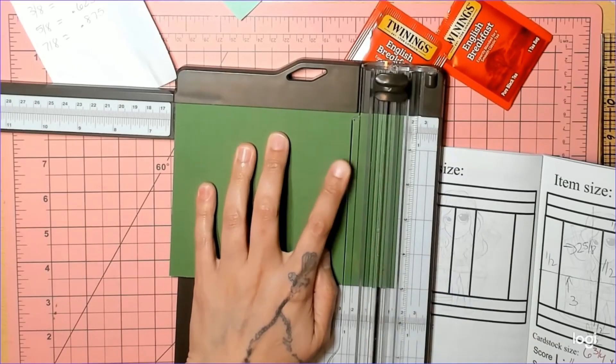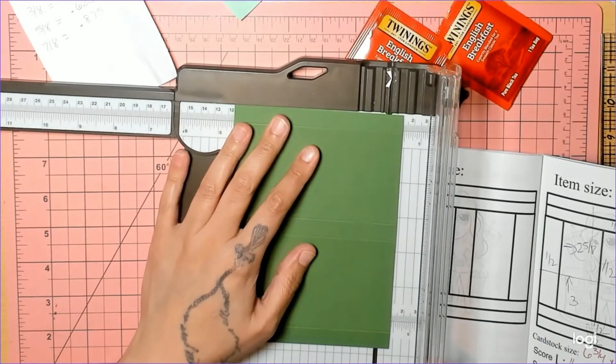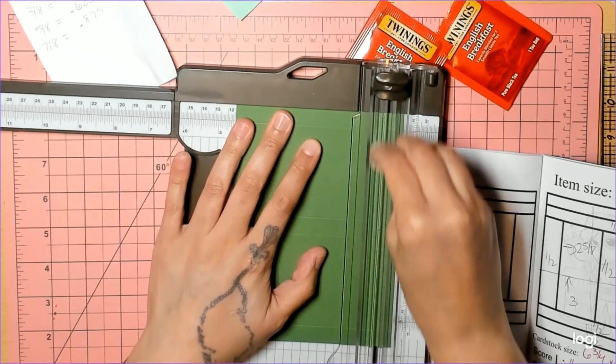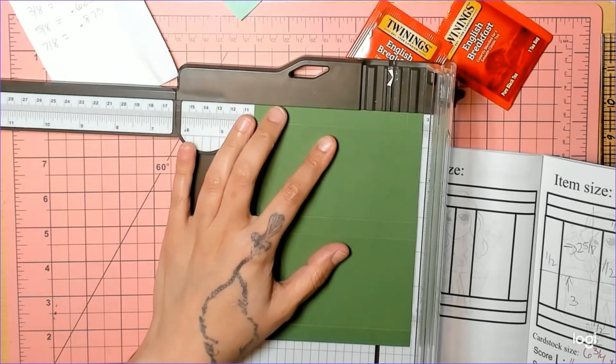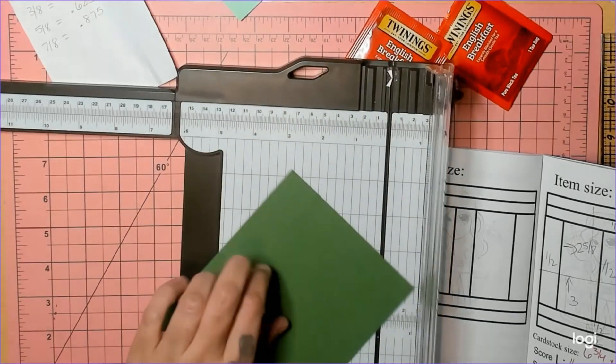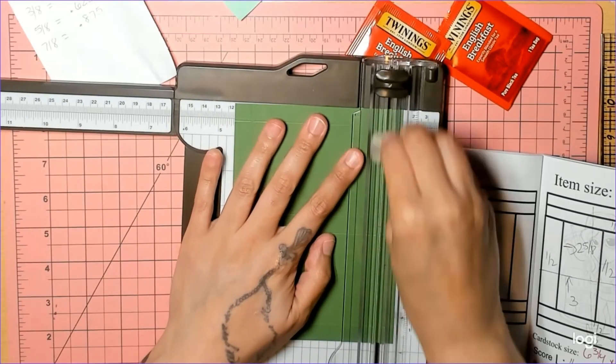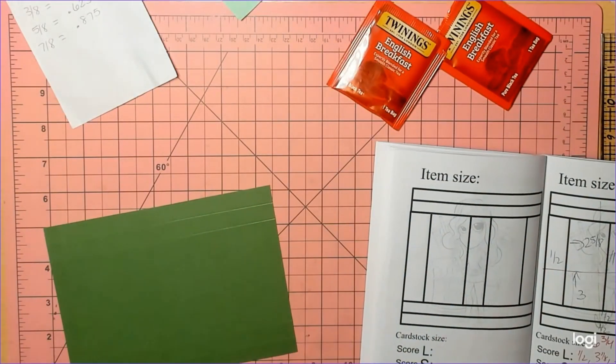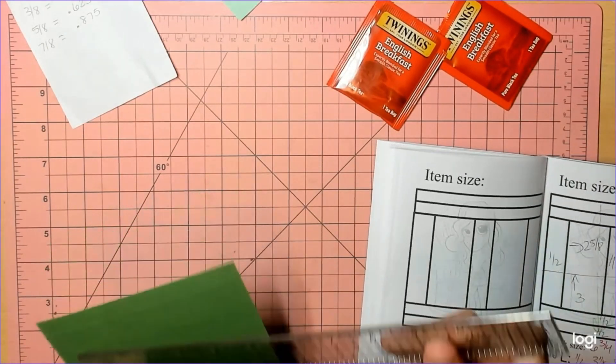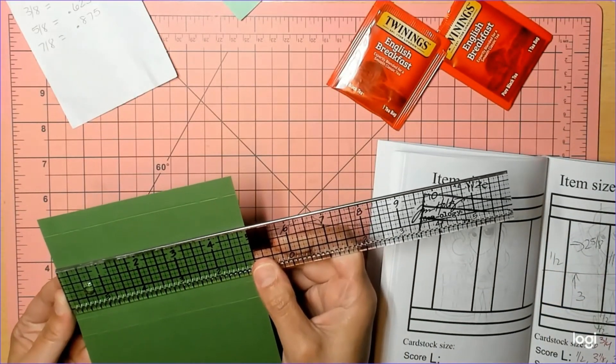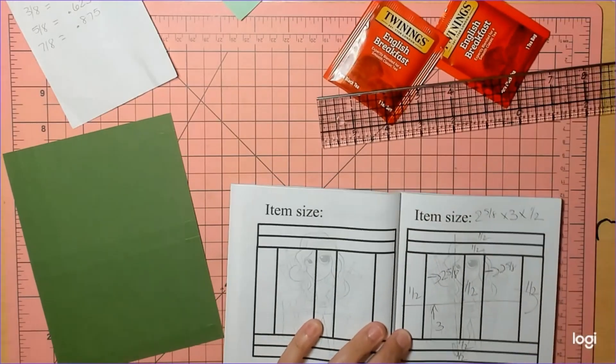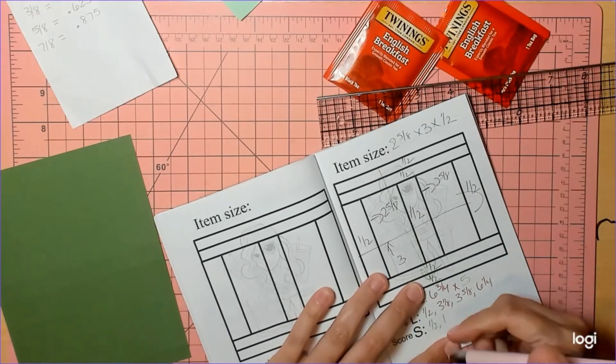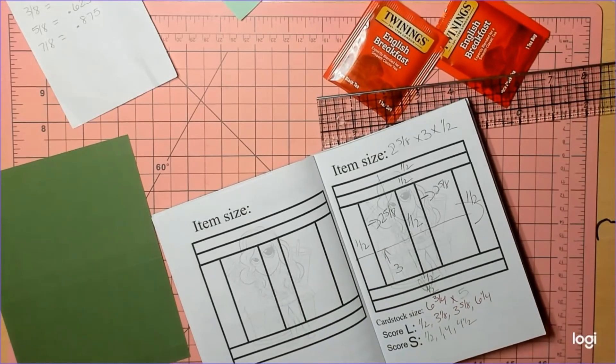On the short side you're going to score it at half an inch. And on both sides, half an inch and one. For my scoreboard users, you are half an inch, one, four, and four and a half.